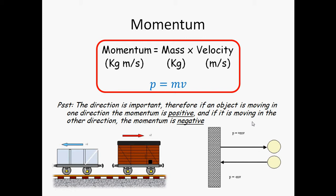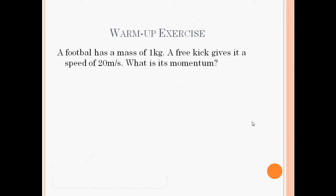Because momentum equals mass times velocity, let's try a really easy exercise. A football has a mass of one kilogram. A free kick gives it a speed of 20 meters per second. What is the momentum? So momentum is mass times velocity, so 1 times 20, so 20 kilograms meters per second.